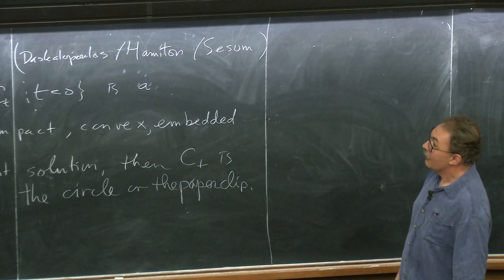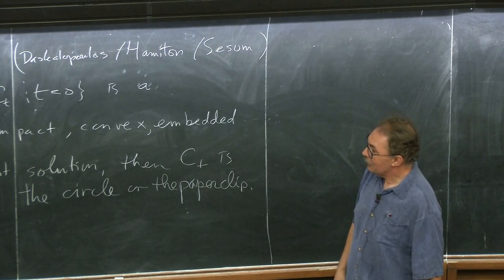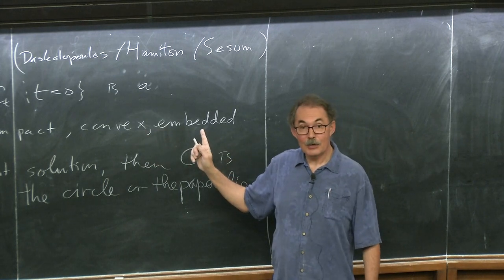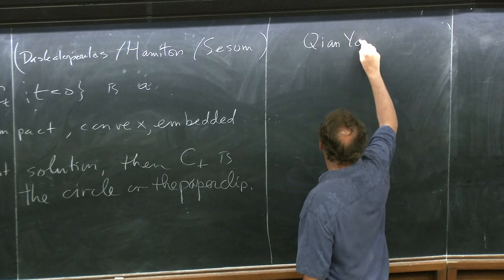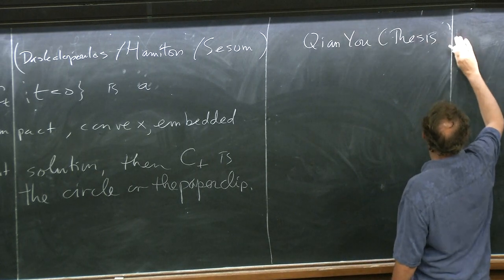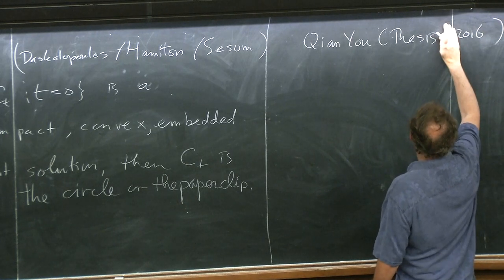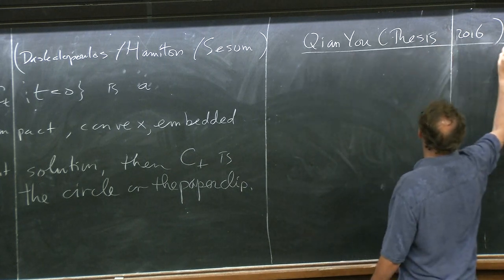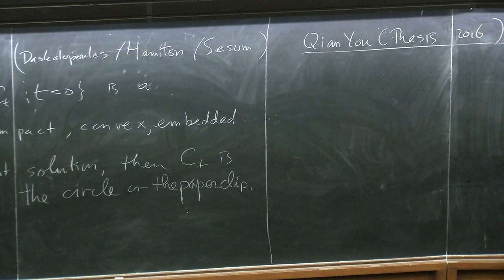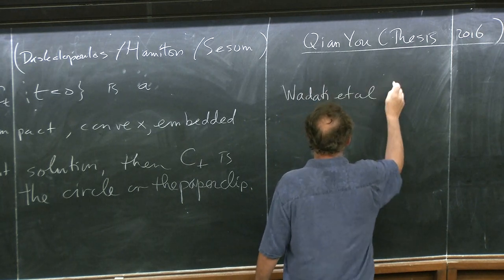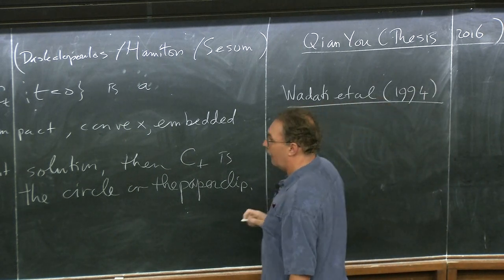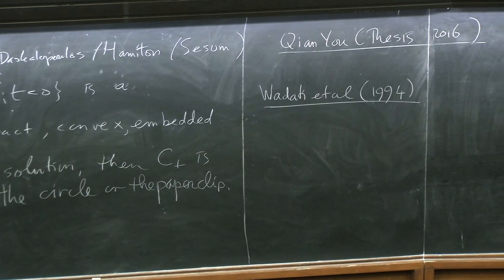So in a sense this is the best possible theorem of this type that can be proved. Further examples showing the necessity of each condition are due to Qian Yu, who in her thesis proved the existence of a whole bunch of other ancient solutions. The simplest one was already found in a 1994 paper by Wadati and co-authors.